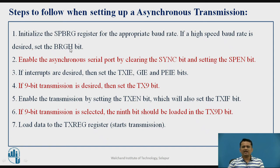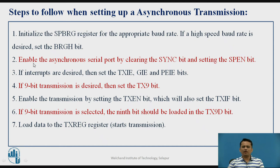The BRGH bit plays an important role in baud rate selection. If you want to change or increase the baud rate, BRGH is important. If BRGH is set, the division factor is reduced to 16, so the baud rate gets increased — for high-speed bit transmission, you set the BRGH bit. The next step is to enable the transmission: clear the SYNC bit because you are going for asynchronous transmission, and then set the SPEN bit to enable the serial peripheral communication module.